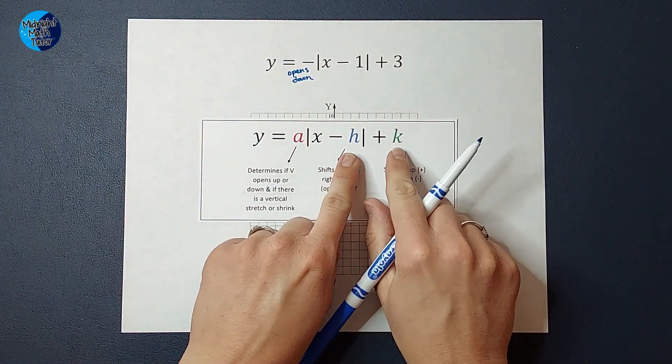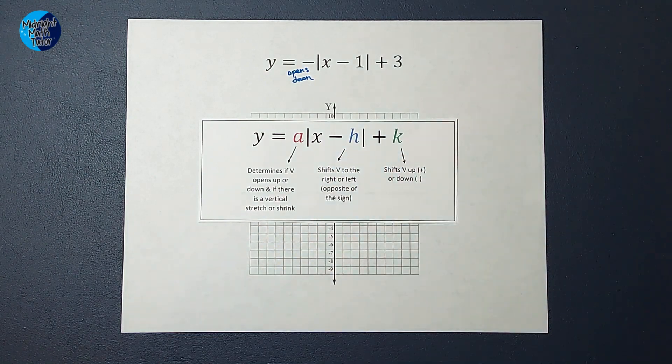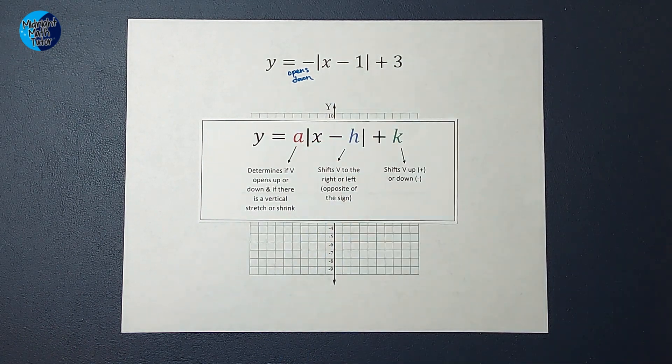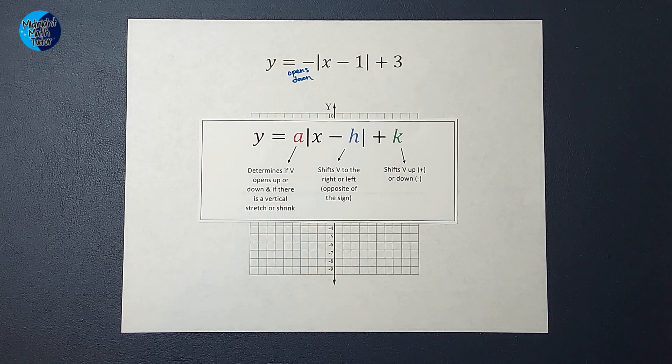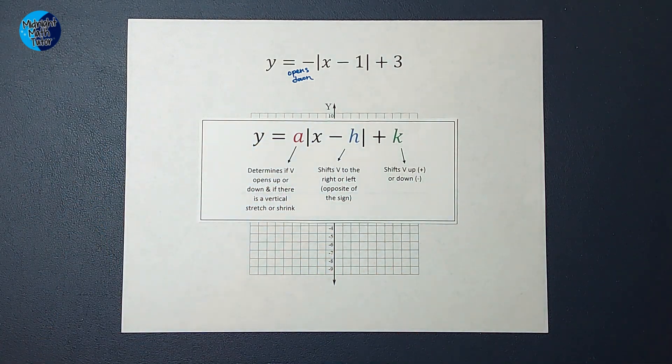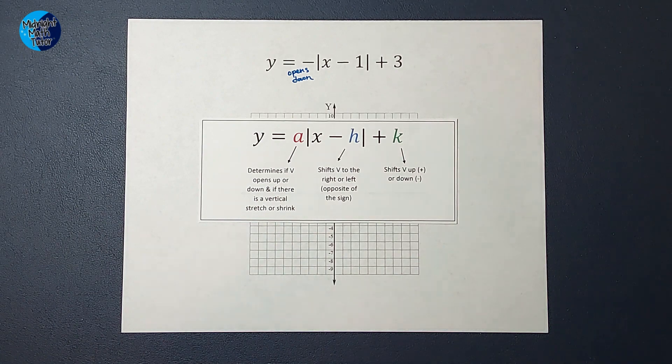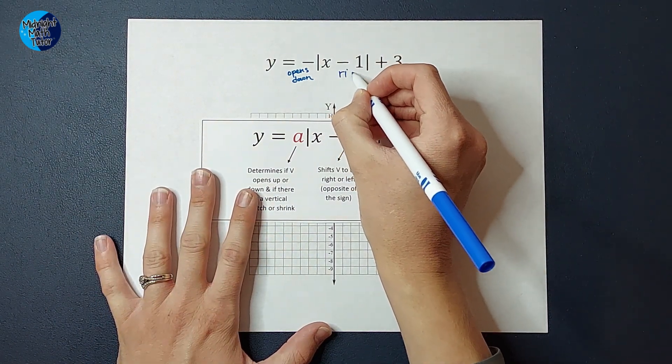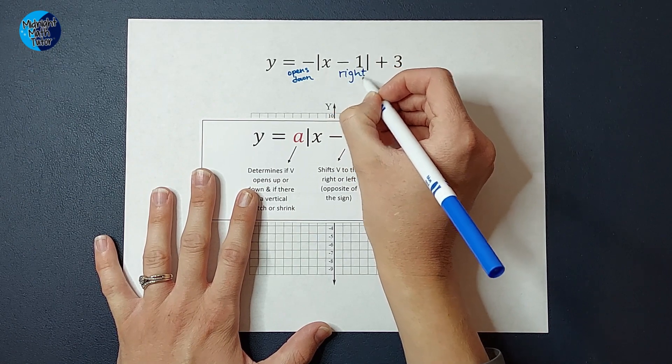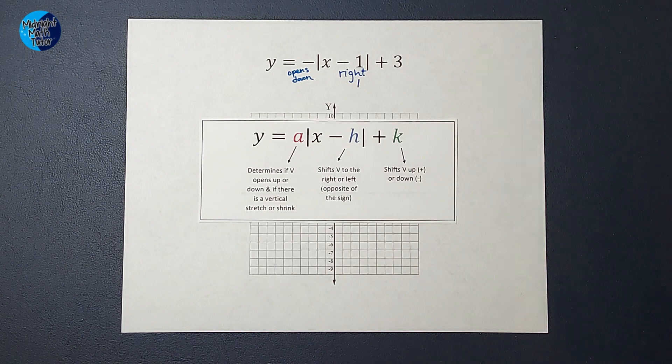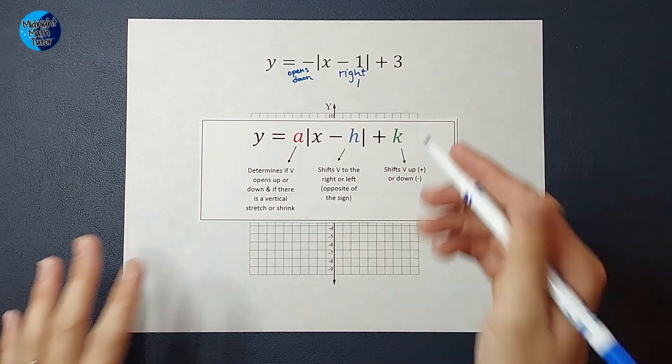Now, these numbers here tell you how much your graph shifts to the right or left and up or down. So the number inside the bars tells you left and right and you do opposite of the sign. So when you see a negative one, you might think to the left one, but we're going to do the opposite and actually move to the right one. The number on the back tells you how much it's shifted up or down and you stick with the sign on this one.